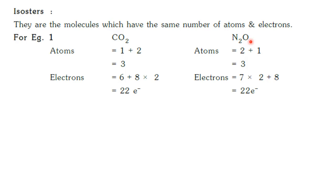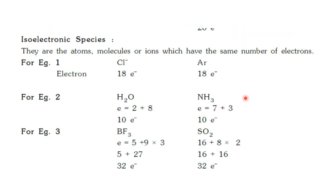Isostars are molecules which have the same number of atoms and electrons. For example, carbon dioxide (CO2) and N2O both have 3 atoms — CO2 has 1 carbon and 2 oxygens, N2O has 2 nitrogens and 1 oxygen. If you calculate the electrons: CO2 has 22 electrons and N2O also has 22 electrons. So this pair of molecules has the same number of atoms and electrons — we call them isostars.